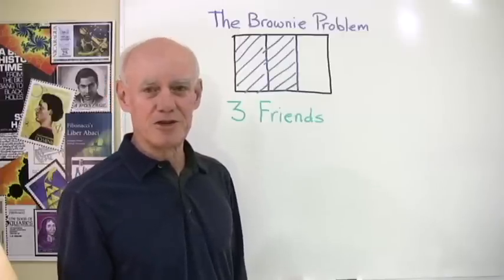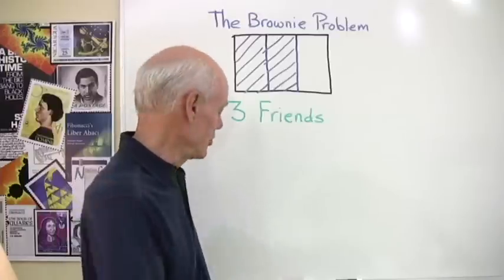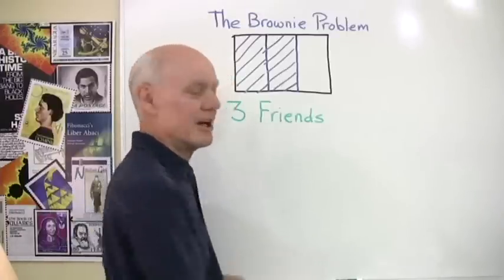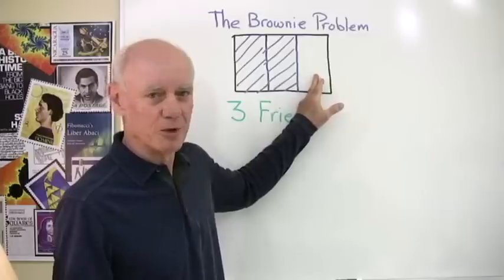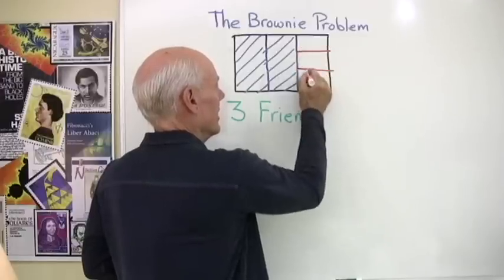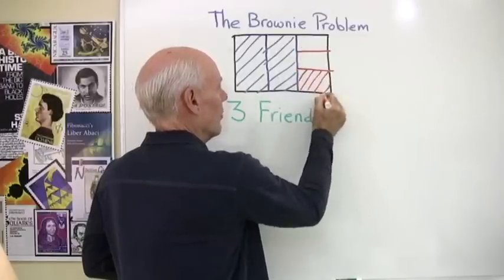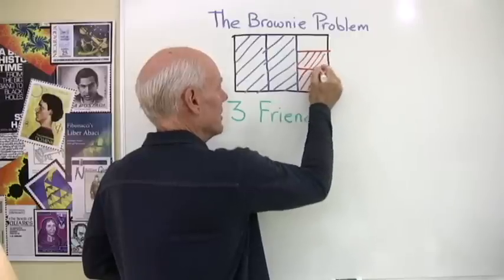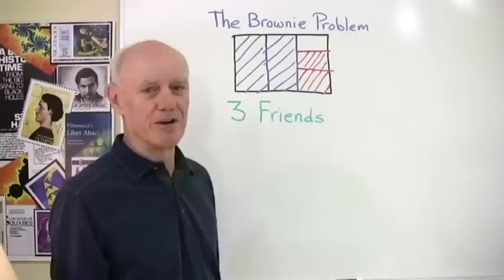Some time goes by, they're still hungry, the third friend hasn't shown up, so they say to themselves, look, let's take that part that we left for the third person, we'll divide it up into thirds. And so they do that, and then they each eat one of those thirds and leave this part for the third friend that doesn't show up.